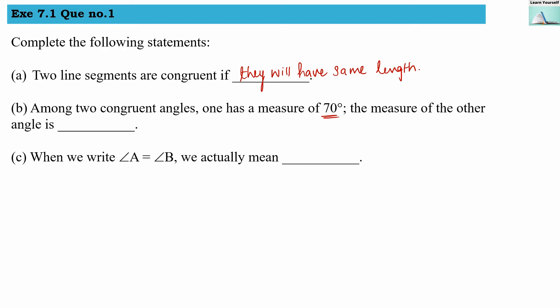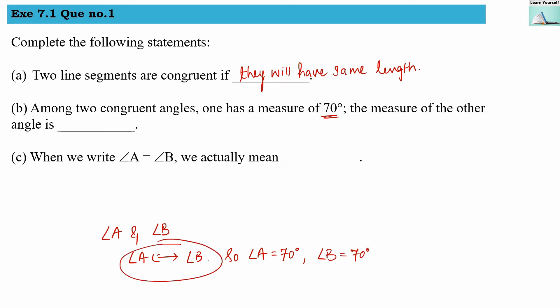Part B — among two congruent angles, one has a measure of 70 degrees; the measure of the other angle is? For example, one angle is angle A and the other is angle B. If angle A and angle B are both congruent with each other, then their measures should be the same. Congruency means: for line segments, same length; for angles, equal measures; for triangles, equal side measures and equal angle measures.